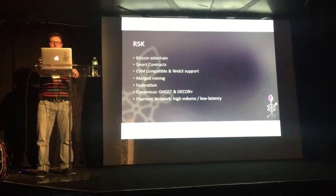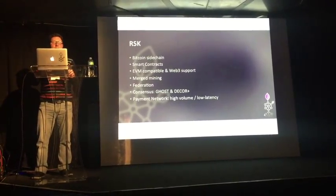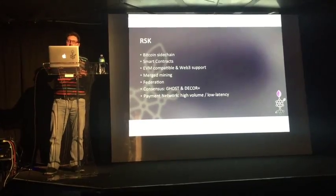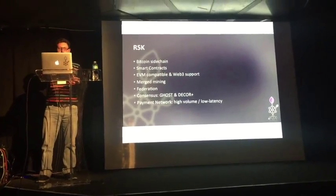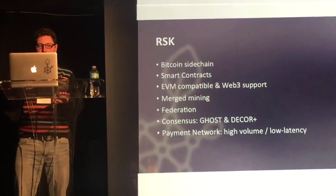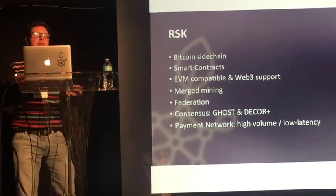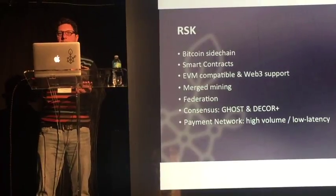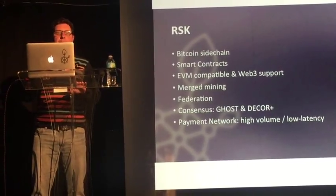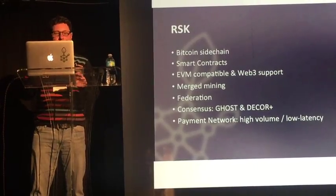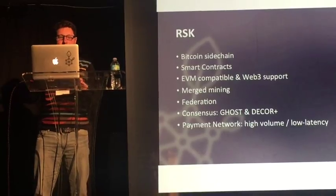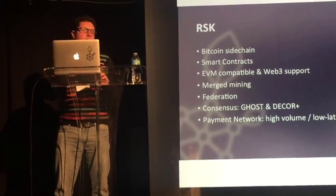We do mining through proof of work. Specifically, we use a technique called merge mining, which allows miners to mine both Bitcoin and RSK at the same time without needing to buy any special hardware or stopping mining Bitcoin to mine RSK. Another key part of our project is the Federation. The Federation is comprised by the most renowned companies in the blockchain space, and they provide a lot of services to the network. The consensus mechanism is similar to the Nakamoto consensus, and we added two other protocols, GHOST and DECOR, and we have a focus to provide lots of transactions per second.